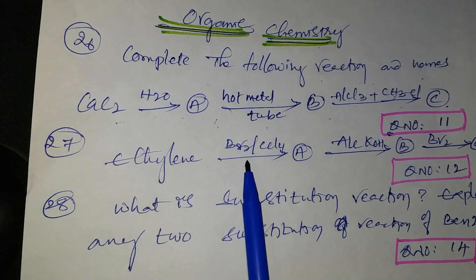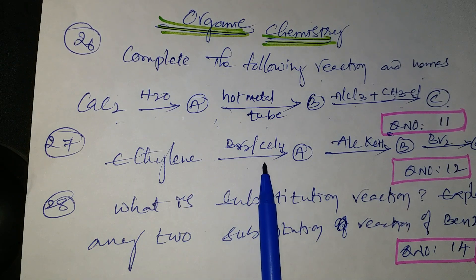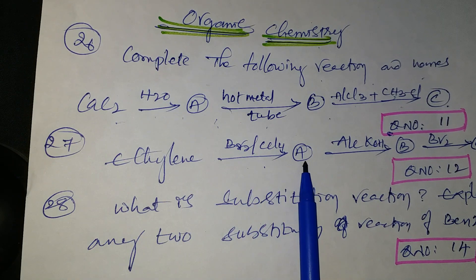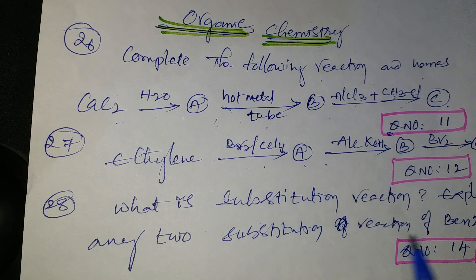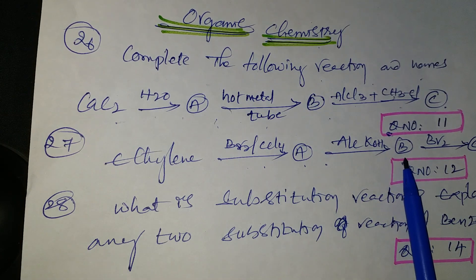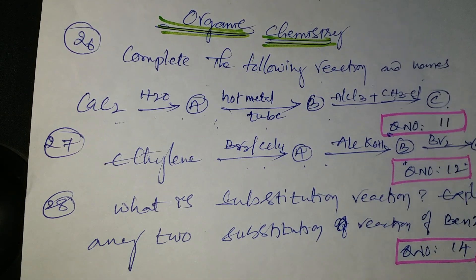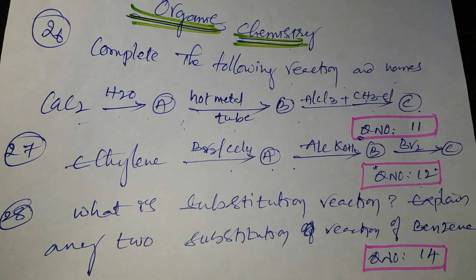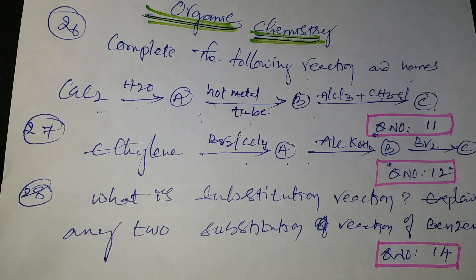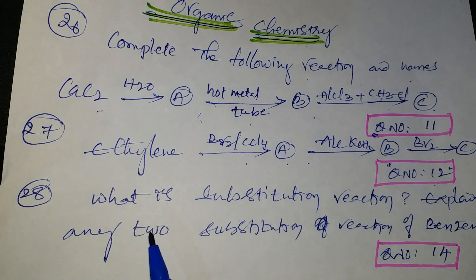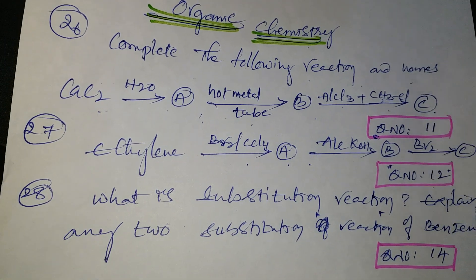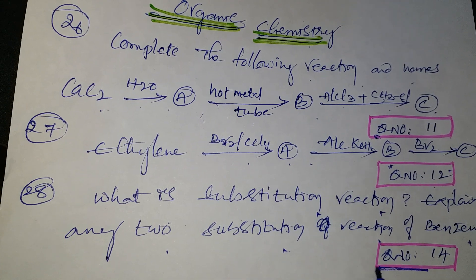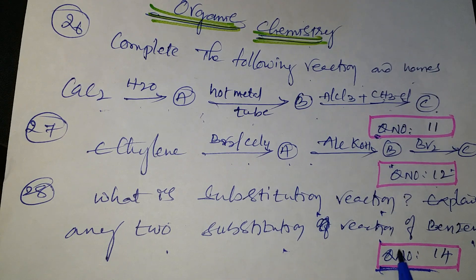Next: ethylene reacts with Br2 in the presence of CCl4 to give compound B; compound B reacts with Br2 to give compound C — question number 12. Next: what is a substitution reaction? Explain any two substitution reactions of benzene — question number 14.